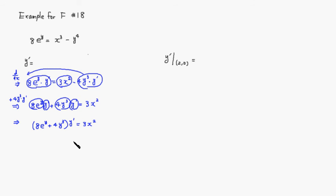Alright, then we divide through by the quantity 8e to the y minus 4y cubed.